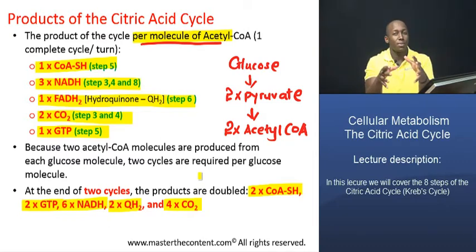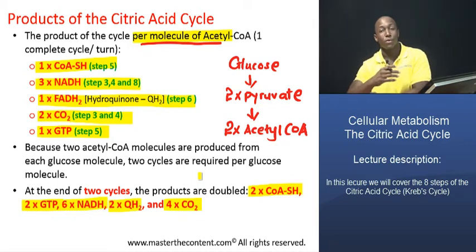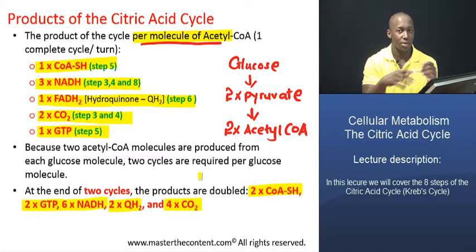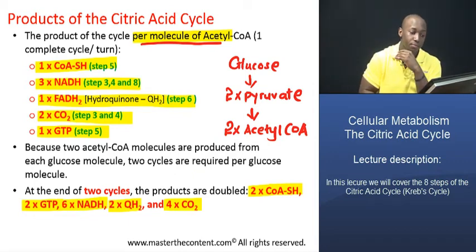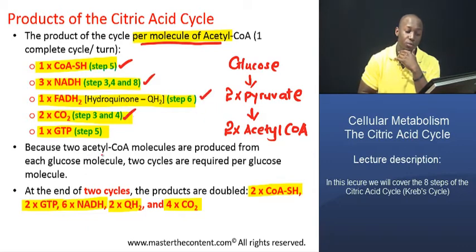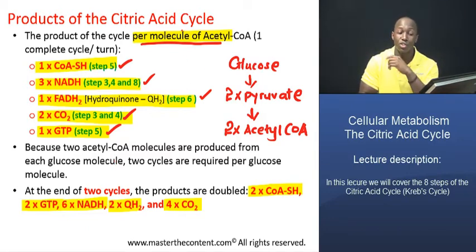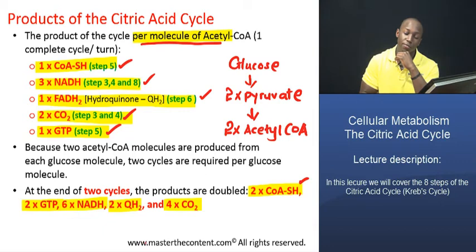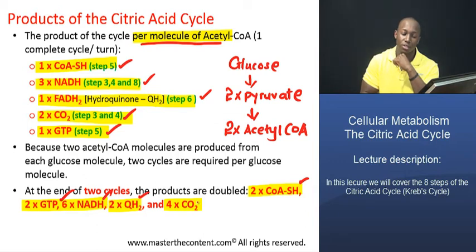It's very important to make that distinction, because a lot of questions might try to trick you on this. Per molecule of acetyl coenzyme A — one revolution around the cycle — the products are: one molecule of coenzyme A, three molecules of NADH, one of FADH2, two of carbon dioxide, and one of GTP. But per molecule of glucose, which produces two molecules of acetyl coenzyme A, all those products are doubled: two of coenzyme A, two of GTP, six of NADH, two of FADH2, and four of carbon dioxide. It's important to remember that distinction.